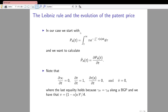We have this expression for the price of the blueprints, which is the discounted stream of operating profits — the integral over profits from time t up to infinity, with the discount factor equal to e to the minus of the integral of the interest rate from time t to time tau. We want to calculate the derivative of this with respect to time, and it makes life easier to compute the derivatives of the boundaries first.